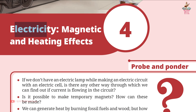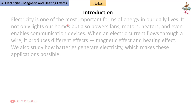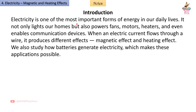Chapter 4: Electricity — Magnetic and Heating Effects. Short notes and summary from Grade 8 Science book 'Curiosity.' Introduction: Electricity is one of the most important forms of energy in our daily lives. It not only lights our homes but also powers fans, motors, heaters, and enables communication devices. When an electric current flows through a wire it produces different effects — magnetic effect and heating effect. We also study how batteries generate electricity.